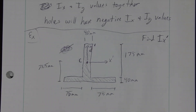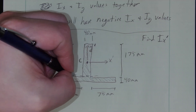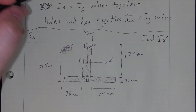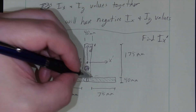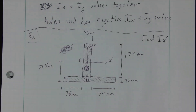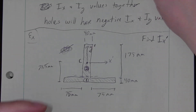You've got two shapes here. You can break this into shape one — the top rectangle — and shape two — the vertical rectangle. Circles, triangles, and rectangles are all shapes we know moments of inertia for about their own centroids. Then we use the parallel axis theorem to convert those to moments of inertia about this X prime axis.